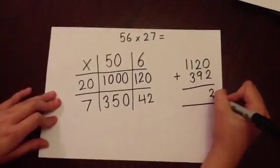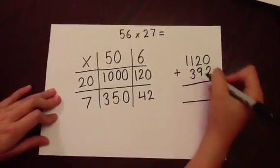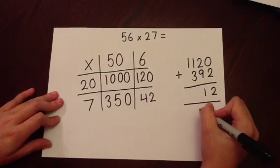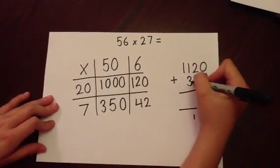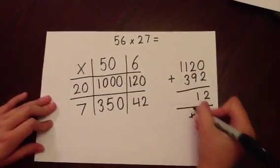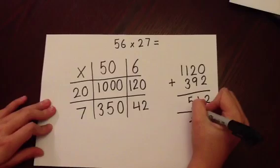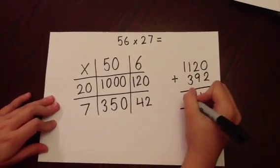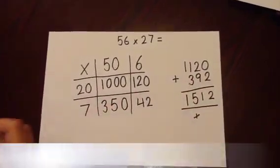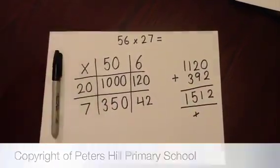0 add 2 is 2, 2 tens and 9 tens are 11 tens, 100 add 300 and the 100 below makes 500, and 1000 adding 0 is 1000. The answer is 1512.